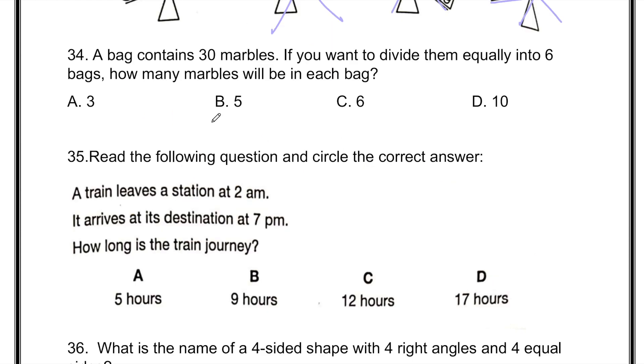If a bag contains 30 marbles, if you want to divide them equally into six bags, how many marbles will be in each bag? To do this we will simply divide 6 and 30. 6 fives are 30.